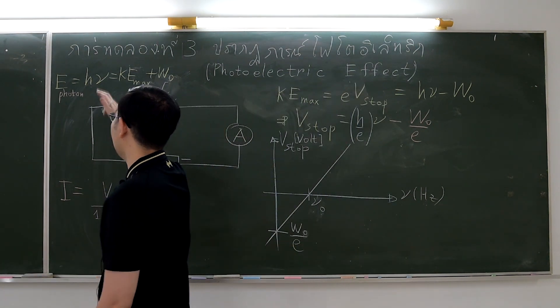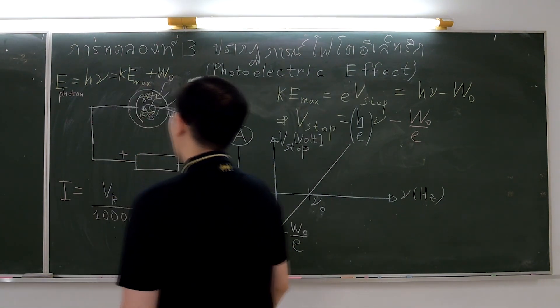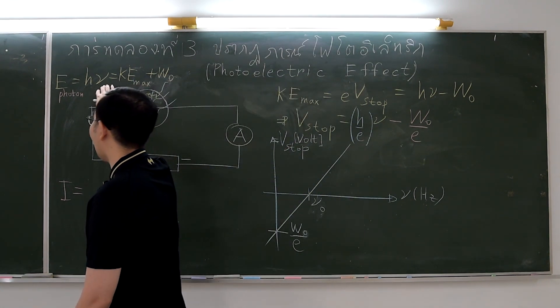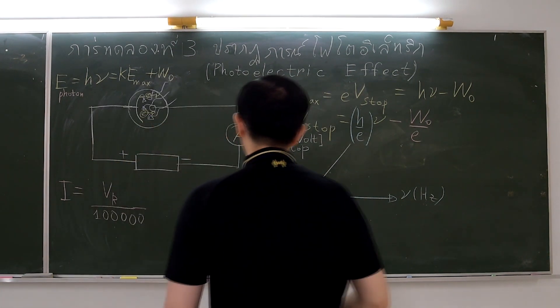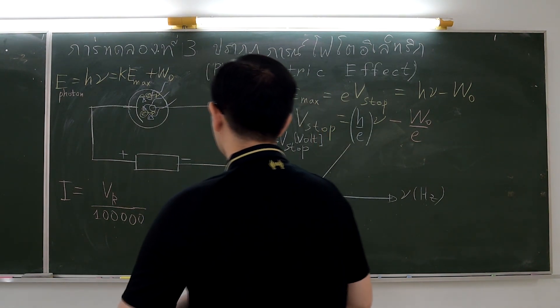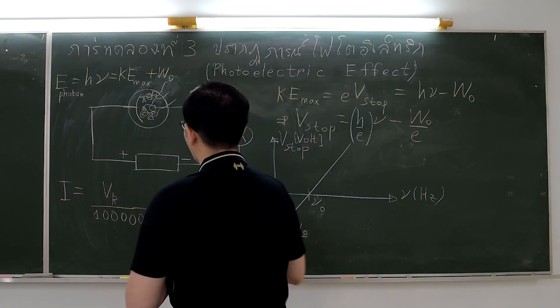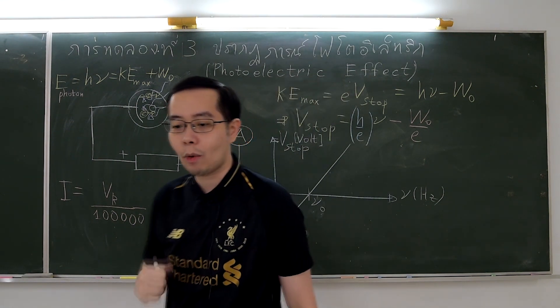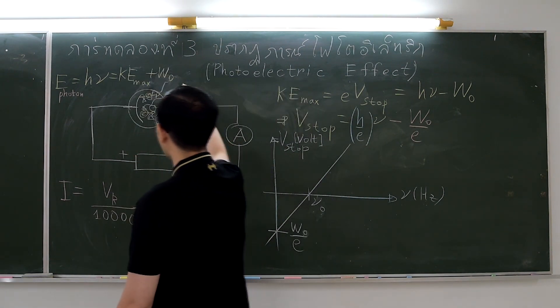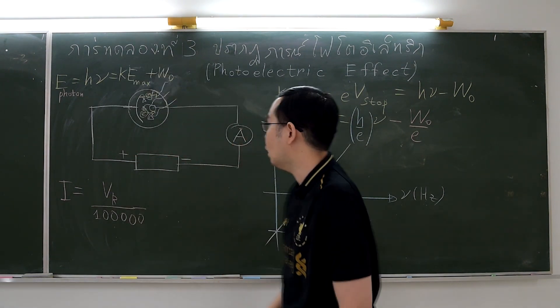Until Planck proposed the concept that the energy of photon is proportional to the light frequency. In 1905, Albert Einstein used Planck's concept of quanta to explain the photoelectric effect. He proposed that light is a particle, so-called photon.